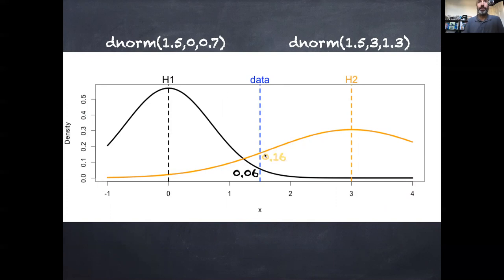And I could see that not only was it more likely that hypothesis two generated this data point, but it was about 2.7 times more likely because I could calculate the likelihood of these two individual hypotheses and then take their ratio to calculate the relative odds.